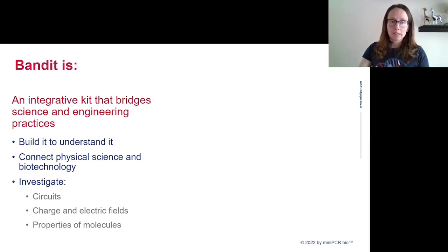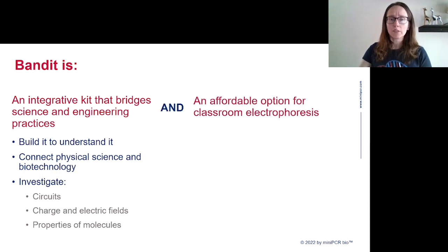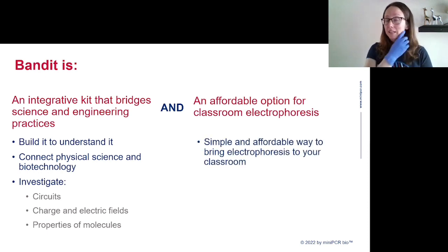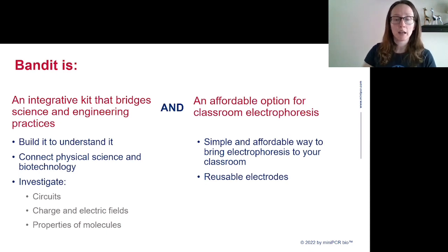Bandit is an integrative kit that bridges science and engineering practices. But I also want to emphasize that it's a fully functional electrophoresis system and an affordable option for classroom electrophoresis. Introductory pricing is seventy-five dollars per unit. So it's a simple and affordable way to bring electrophoresis into your classroom. It is not like a single-use kit. You can use it over and over again. Even the electrodes, that fine wire, can be reused time and time again. It runs on electrical power, not on batteries. So there's no consumables other than your gel-making supplies.